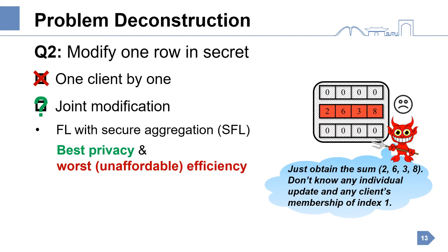For the second problem, it is infeasible for clients to modify one by one. One extreme case is combined federated submodel learning with secure aggregation, or SFL for short. SFL lets all the chosen clients in one round be involved for each row of the full matrix. Thus, SFL provides the best privacy, but the worst efficiency.